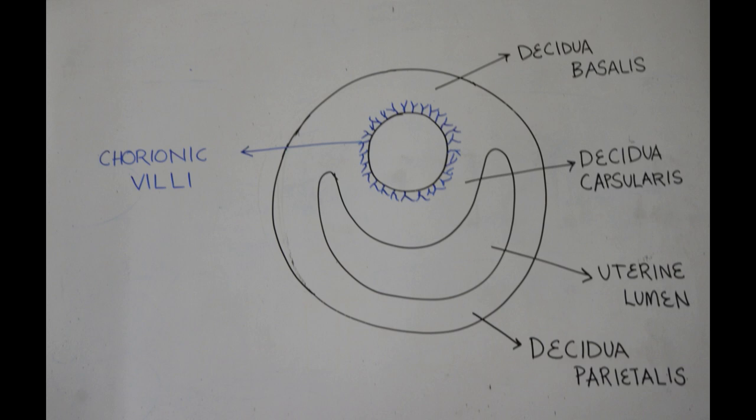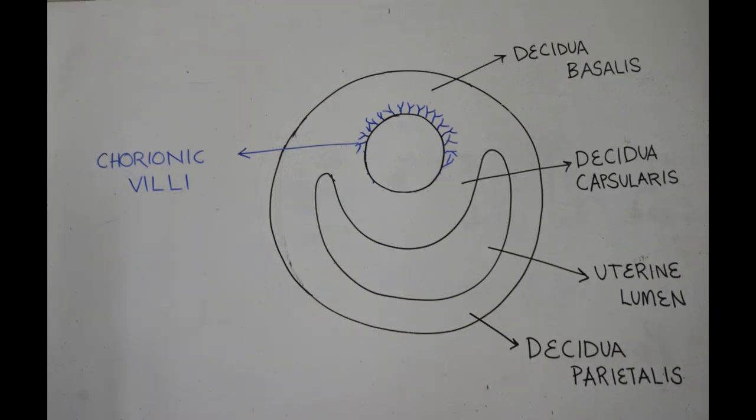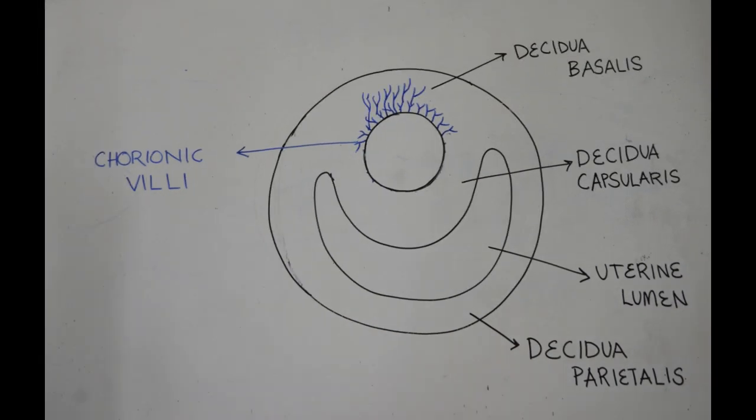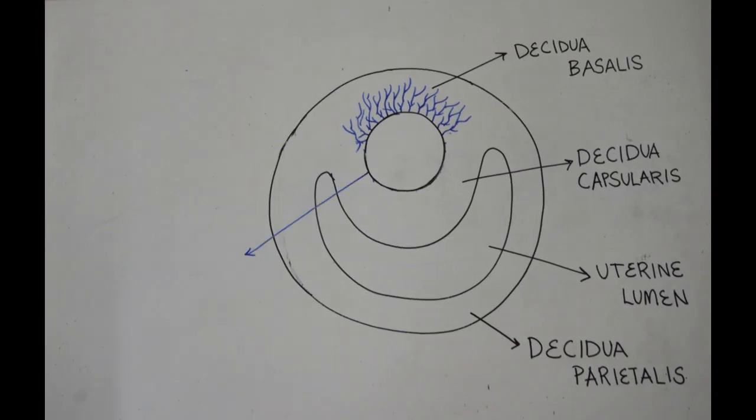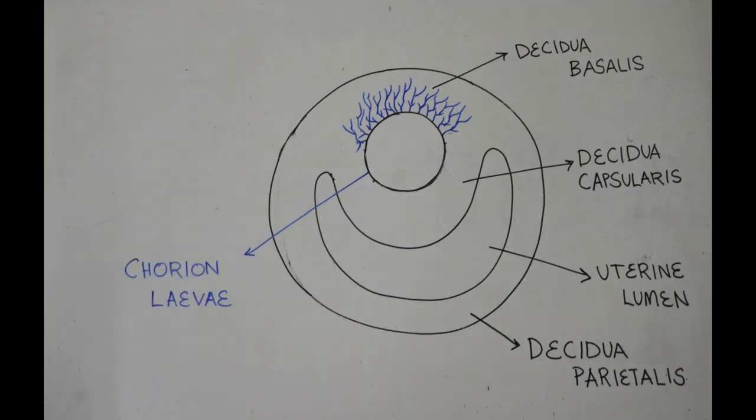The chorionic villi are first formed all over the trophoblast. The villi related to the decidua capsularis are transitory and degenerate. This part of the chorion becomes smooth and is called chorion laeve. In contrast, the villi that grow into the...